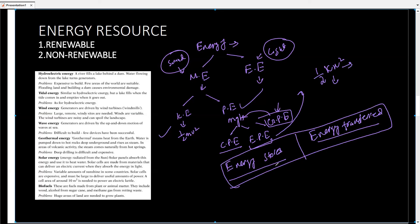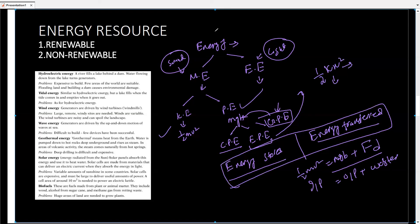We discussed energy conservation: energy cannot be created or destroyed, only converted from one form to another. The formula ½mv² = mgh applies, and if work against friction is present, input equals output plus waste energy. We also discussed efficiency, renewable and non-renewable energy resources, factors for using energy resources, and how every energy resource relates to the sun. The next topic will be work and power, with some exam questions covered as well. Subscribe and like the video, and press the bell icon to get notified when the next video is uploaded.